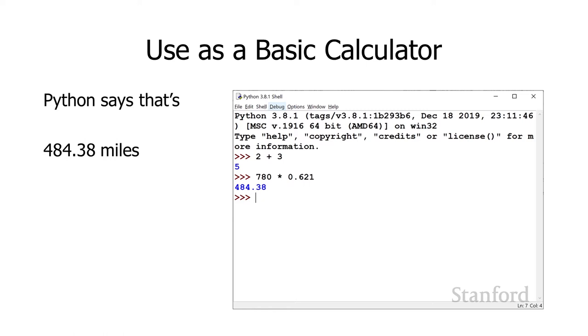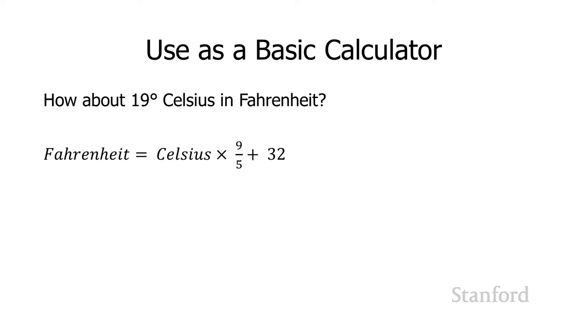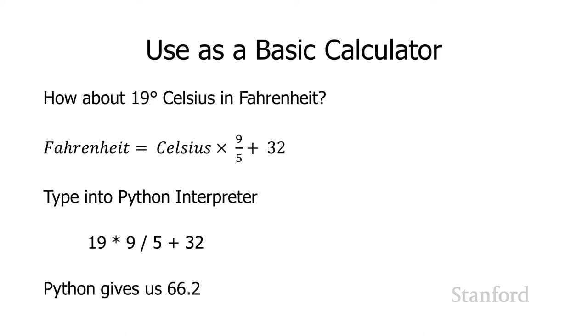We can do similar calculations. Let's say I want to convert from Celsius to Fahrenheit. I have a friend in Paris who says it's 19 degrees Celsius. Honestly, I have no idea what that means. But I do know the formula for conversion. Here's the formula. I can say, Python, 19 times, again using the asterisk for times, 9 divided by 5 plus 32. We use the slash there for division. Python's going to return with 66.2 degrees. That sounds okay, maybe a little cold for me.